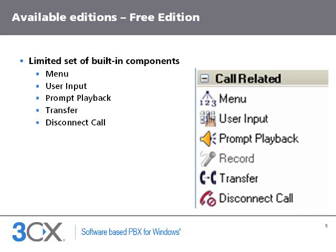3CX VAD is available in two editions. The free edition allows using the entire functionality but only with a limited set of built-in components. Components available in the free edition are: the menu component, which allows selecting a branch based on a single digit entered by the user; the user input component, that can be used to collect one or more digits from the user; the prompt playback component, which allows playing an audio file to the user; and the transfer component, that can be used to transfer the call to an extension, a queue or another IVR. And the disconnect call component, which allows dropping the call.